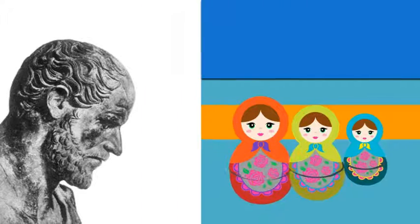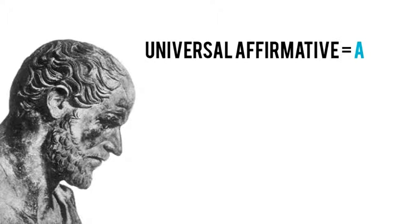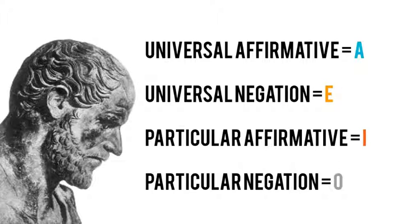Alright. So, Aristotle tells us that there are four types of declarative statements: universal affirmative, universal negation, particular affirmative, and particular negation. And he labeled each one A, E, I, and O, respectively.